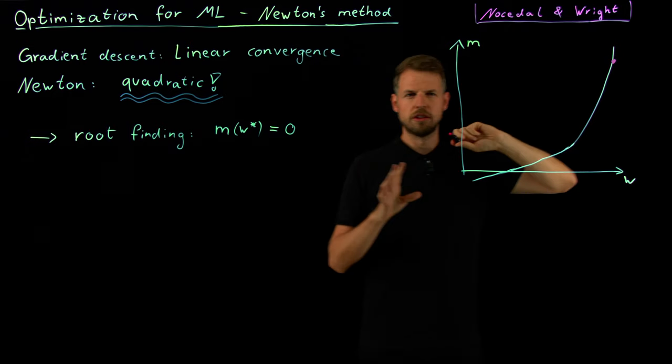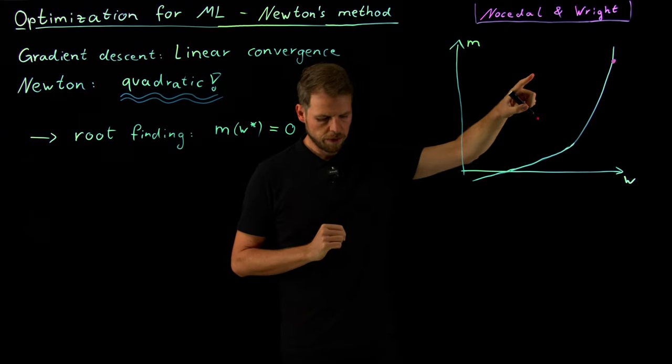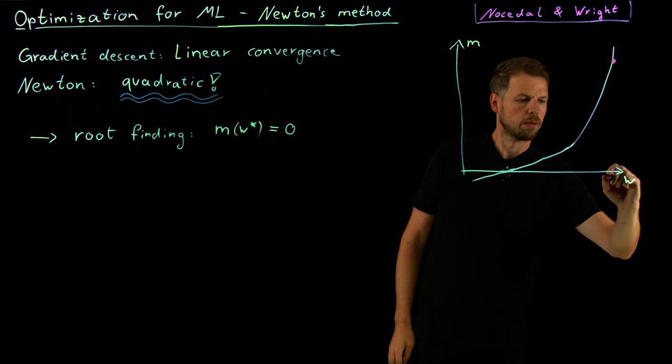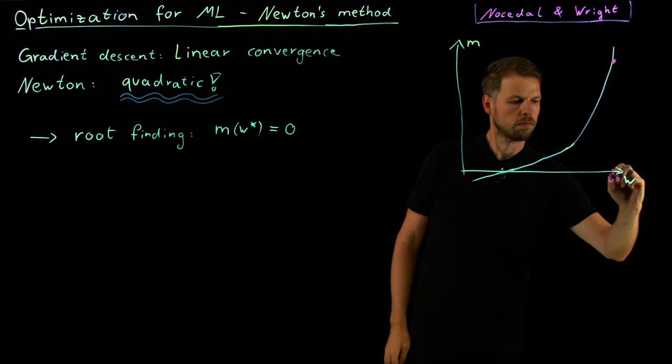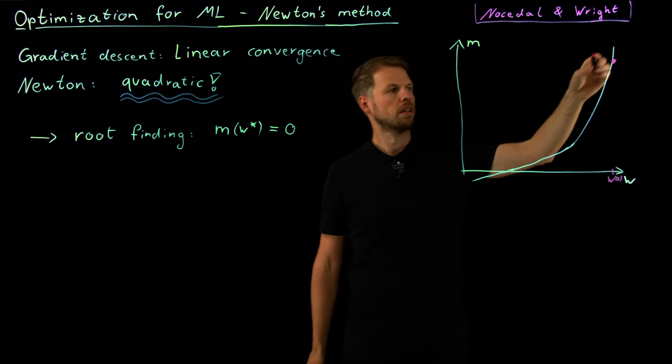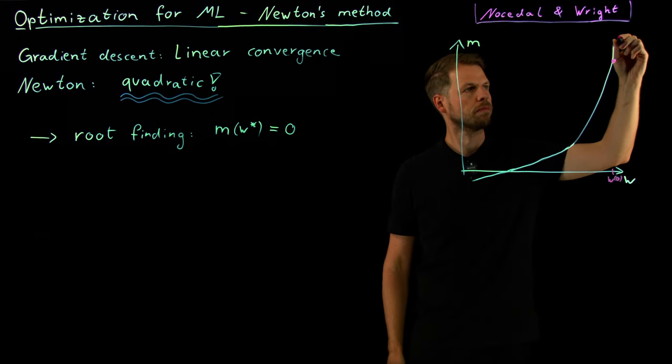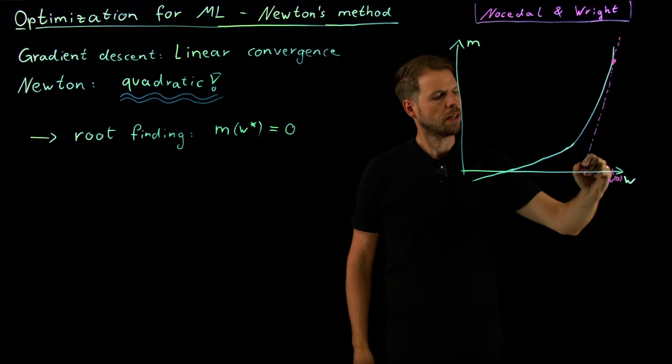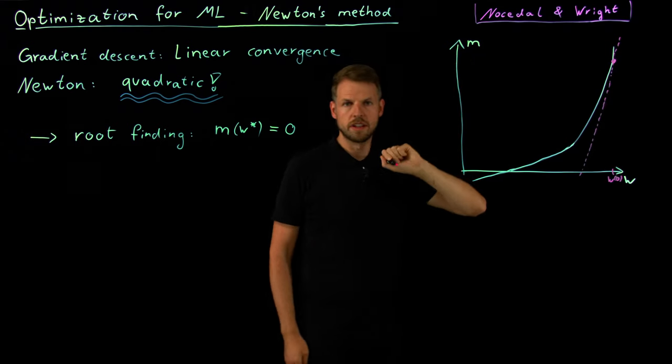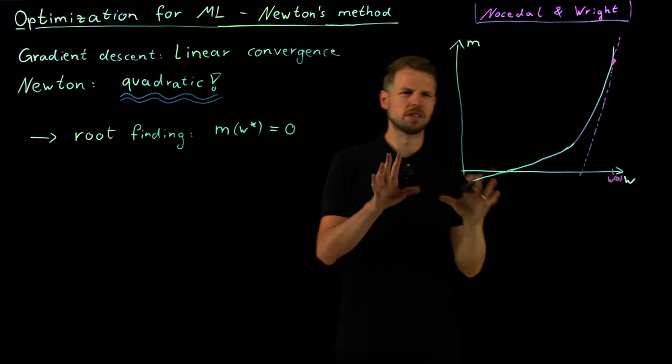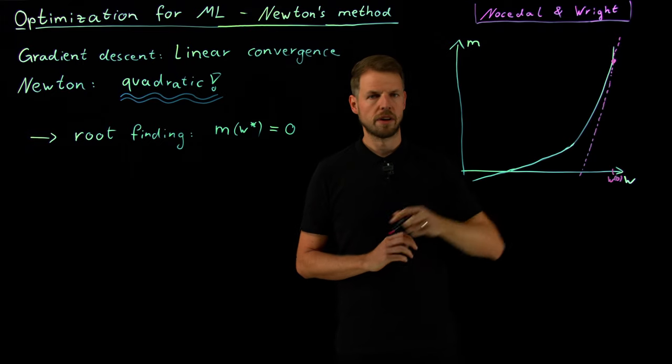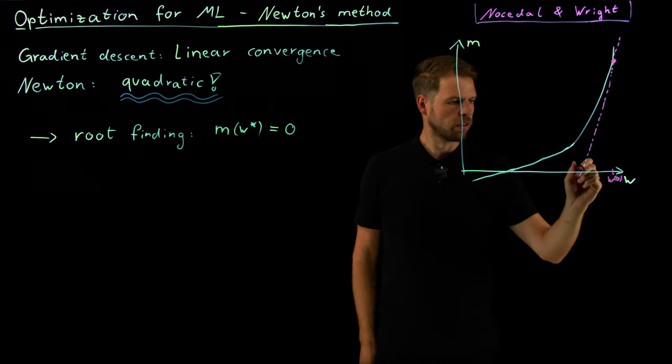And the idea is actually fairly simple. We have now our function here, and this is our starting value. Let's say this is W zero. And then we can consider the tangent here. And the tangent will go through zero eventually. We will also discuss, doesn't have to be the case, then Newton's method runs into issues. But let's assume that we find a point where this crosses zero.